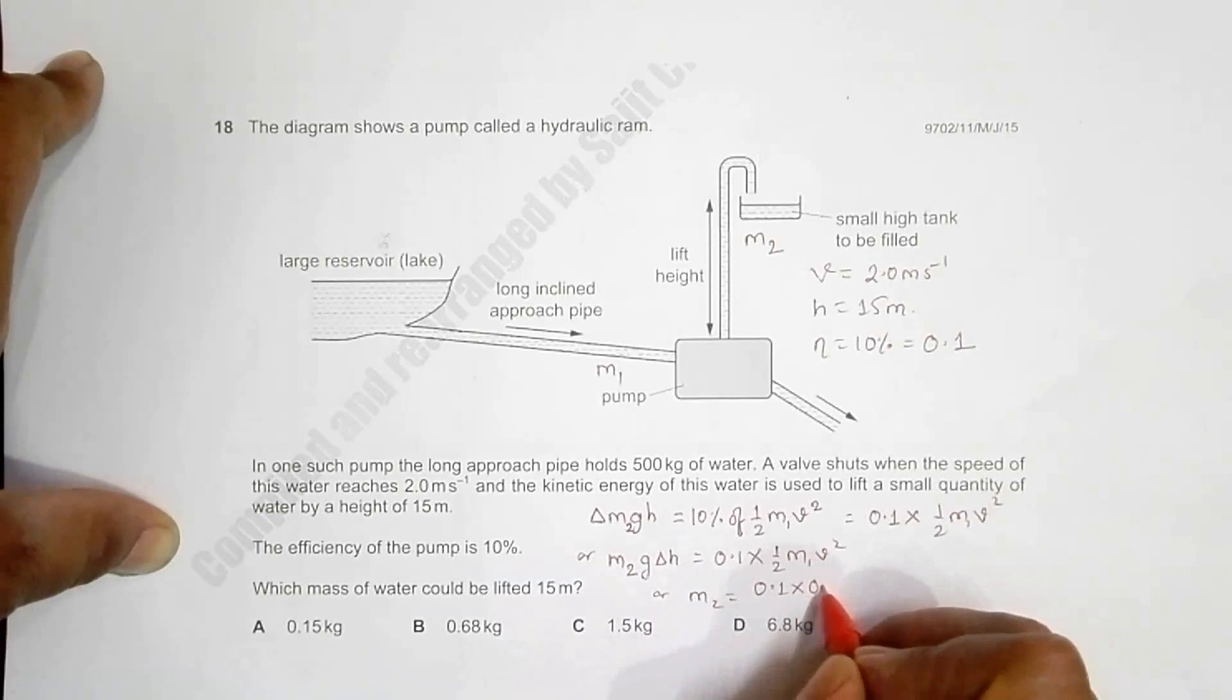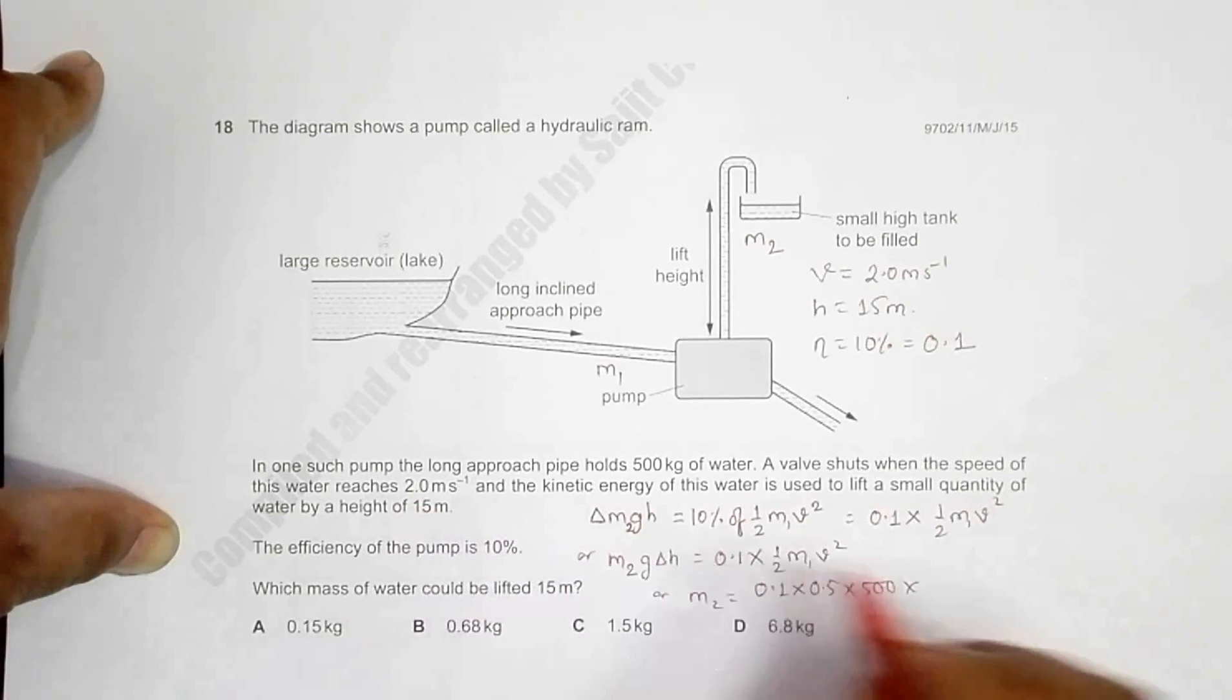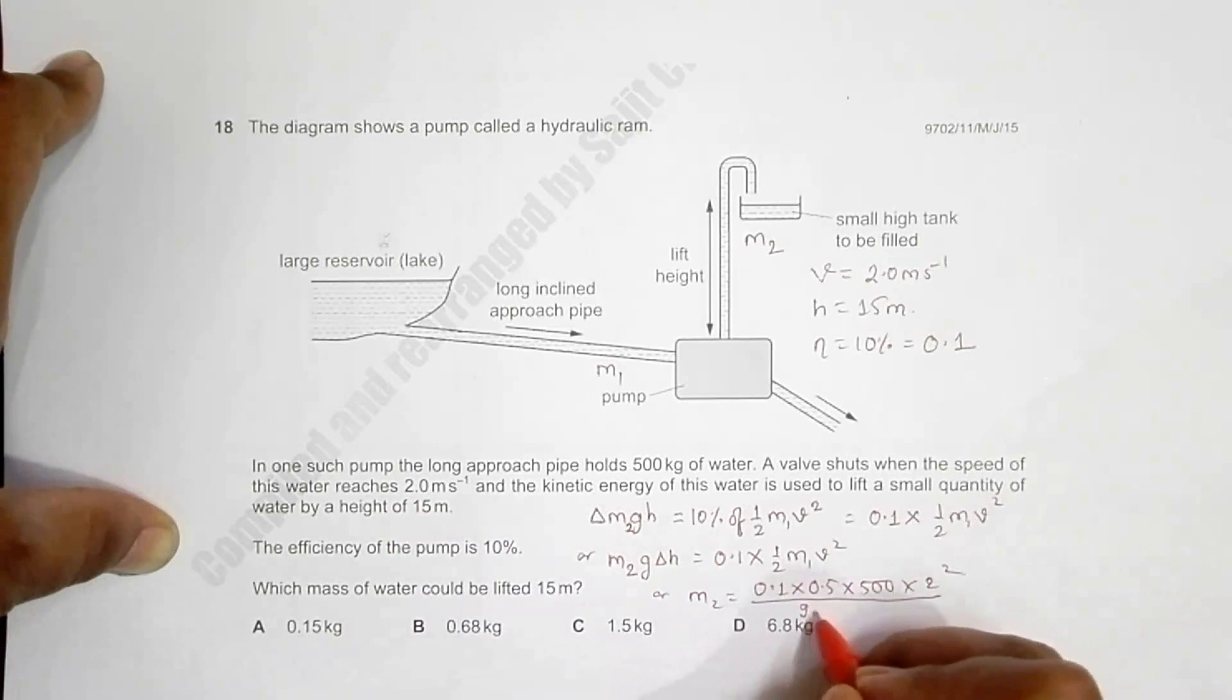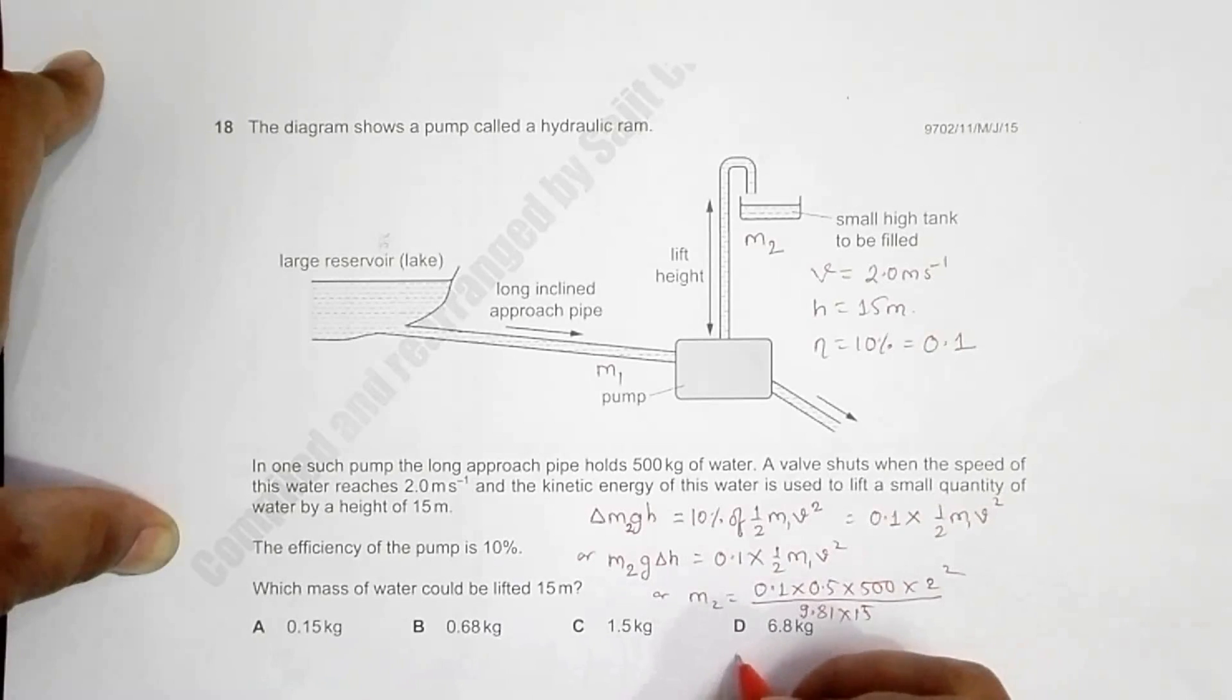This is 0.5 into m1 is 500 into its velocity is 2 squared, all divided by g is 9.81 into the change of height is 15 meters.